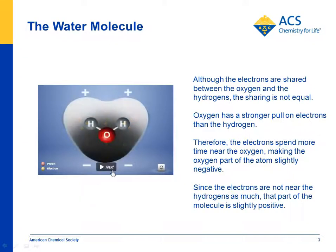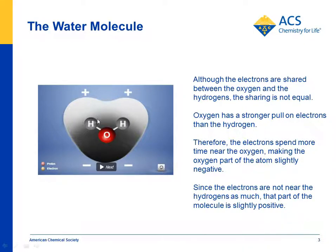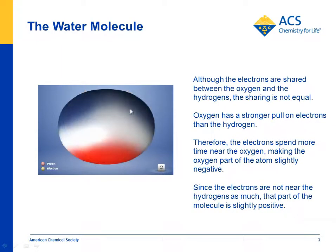That's sometimes depicted by a charge density model. The darker area shows that electrons spend more time near the oxygen than they do near the hydrogens. Since electrons are negative, this area of the molecule is slightly negative, shown by these negative signs. The area near the hydrogens is slightly positive, since the electrons don't spend as much time there. The charge density model is often shown as a colored model, where this part is negative and this part is positive.